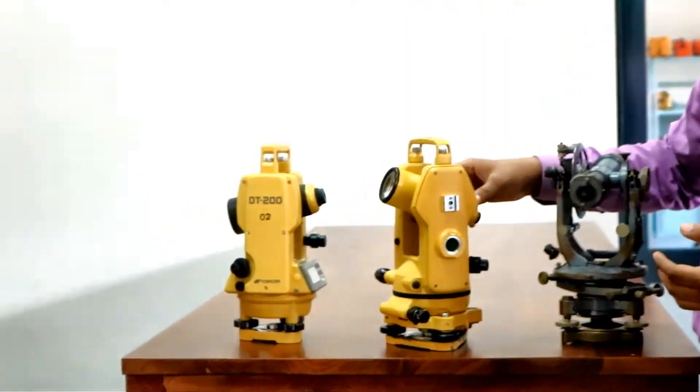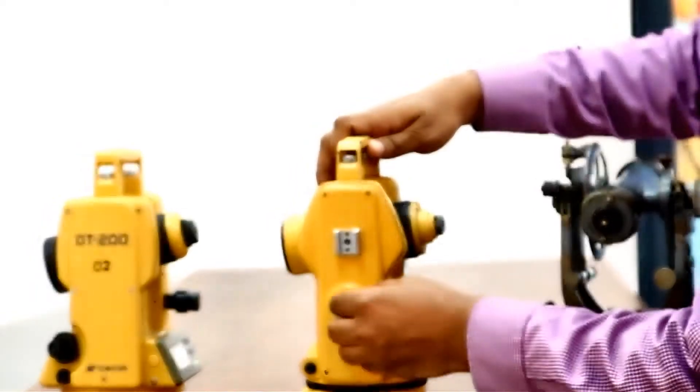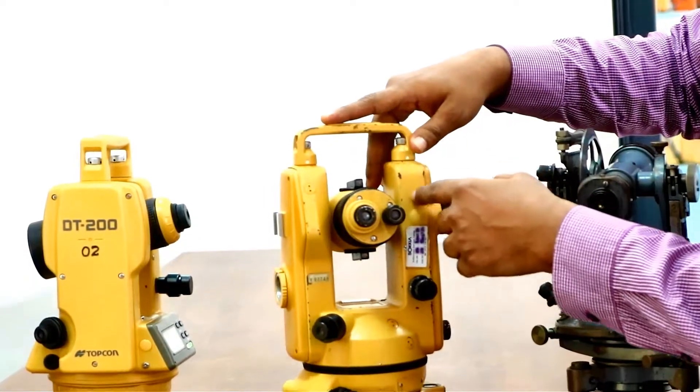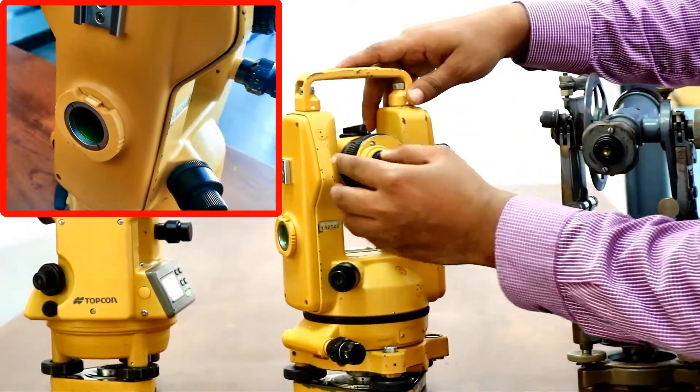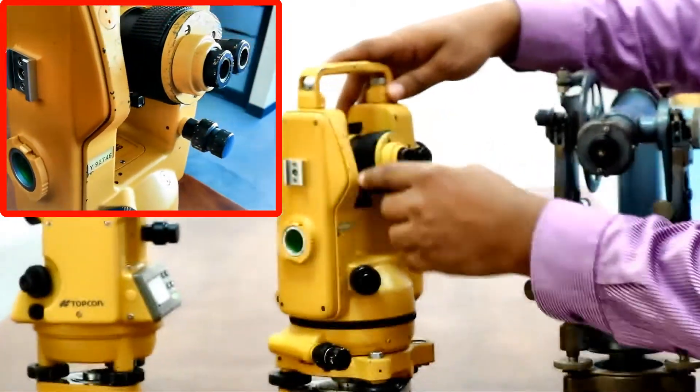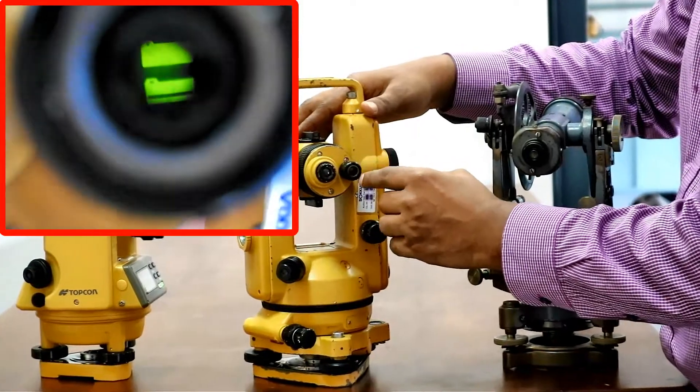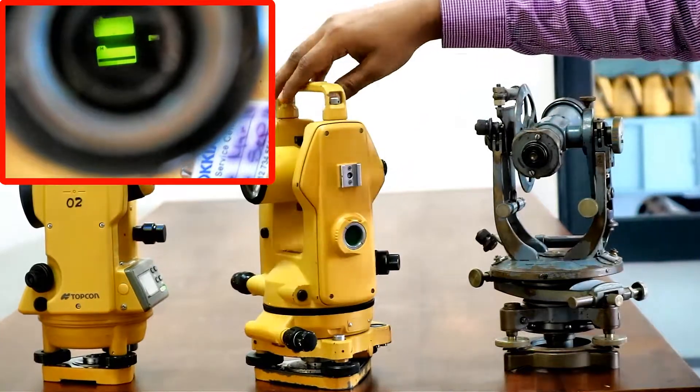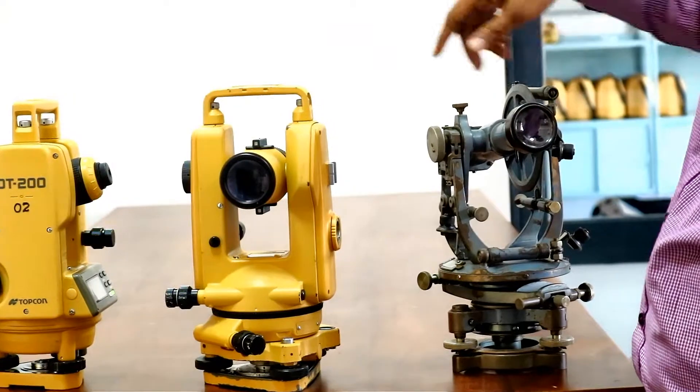We call it micrometer theodolite. The difference here is there is a mirror attached to the theodolite to direct the sunlight into the theodolite, because there is a different mechanism to get the readings. So this sunlight is directed to the vertical and horizontal circles. There is a special telescope to observe the angular measurements. And all the parts are similar to the vernier transit theodolite.